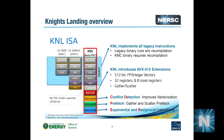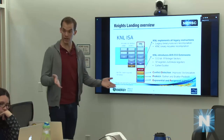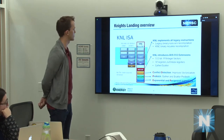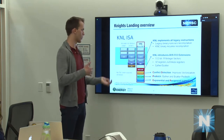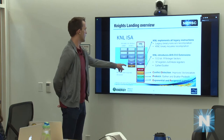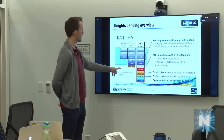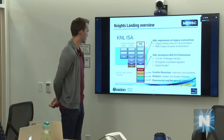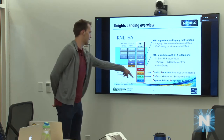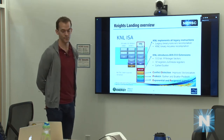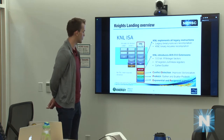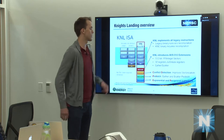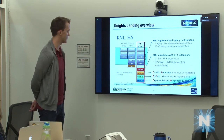Haswell supports 256-bit instructions via AVX2, and KNL supports AVX512, which is 512-bit. There are two vector processing units per core on KNL, so besides core counts going up, vector width per core has also increased. Intel has not removed any instructions, so anything compiled on Haswell, Sandy Bridge, or Ivy Bridge will still run on KNL. It may not achieve peak performance without AVX512 instructions, but it will run — unlike Knight's Corner, which had a different instruction set and required recompilation.